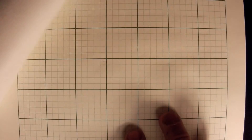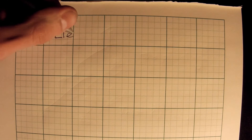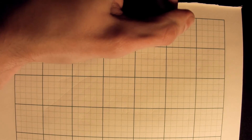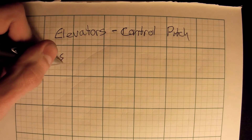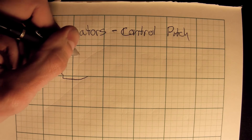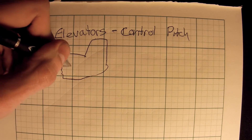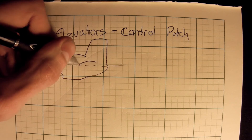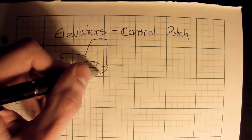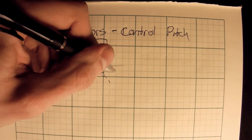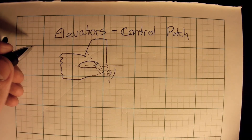Now let's move on to the next one: pitch control, or the elevators. Elevators control pitch. Let's draw a cross-section of the tail. This is our vertical tail. This is our chord line for the stabilizer, and then we have the elevator drawn right here — with its own chord line and an angle theta between them.